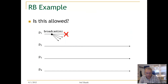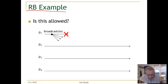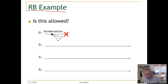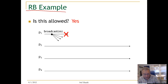Let us see some examples of reliable broadcast. Is this allowed: a process broadcasts a message and then crashes, and no process in the system delivers the message? The answer is yes, because reliable broadcast only makes guarantees if the sender is still alive and correct. This is a case where the sender crashes, so it is fine that no correct process delivers anything.